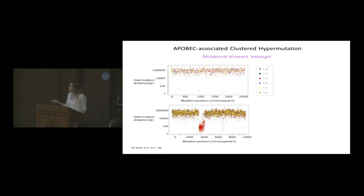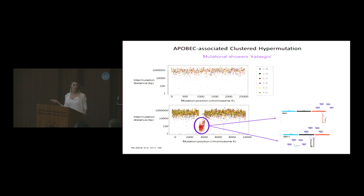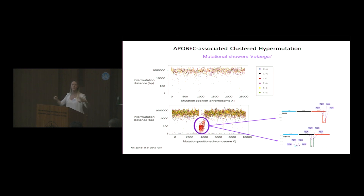Taking these individual clustered mutations — mainly C-to-T mutations but with others present — and plotting them into sequence context, you get signatures 2 and 13-like patterns. So we think APOBEC is behind this kind of clustered mutagenesis as well, as confirmed by overexpression experiments in yeast. Notably, in the clustered case the process is different: APOBECs are potentially localized to one specific genomic spot rather than acting genome-wide.